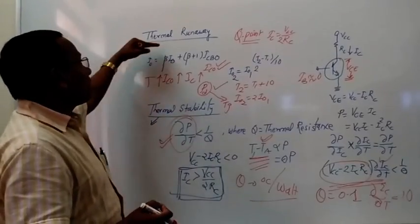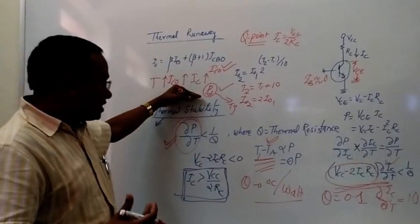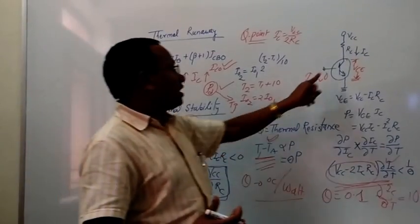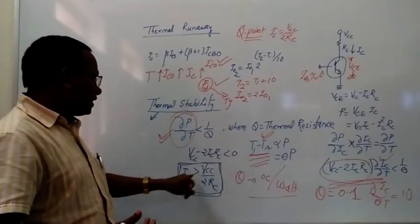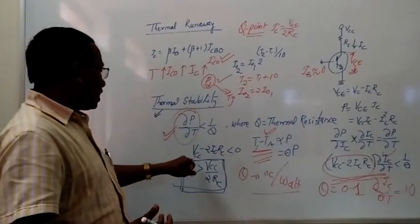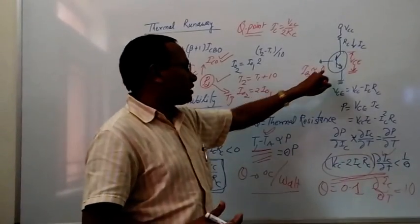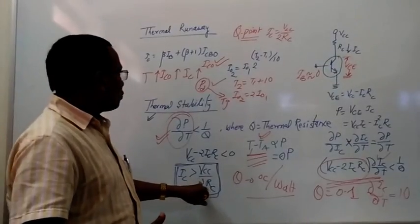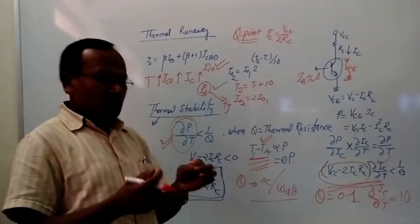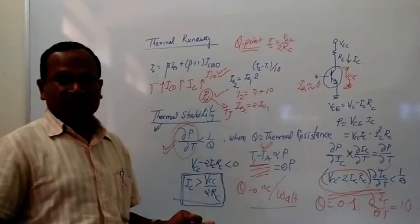To summarize: thermal runaway is the process in which collector current abruptly increases with a change in temperature, and it must be avoided in any BJT. The theoretical condition to avoid thermal runaway is ΔP/ΔT < 1/θ, where θ is thermal resistance. Applying this to a practical BJT circuit gives the practical condition: IC > VCC/(2·RC). Ensuring thermal stability means avoiding thermal runaway in the bipolar junction transistor.